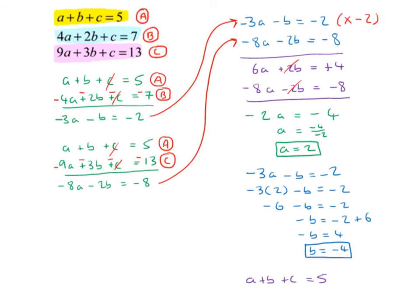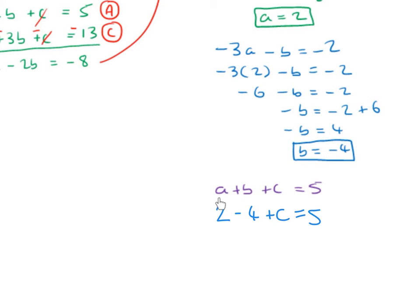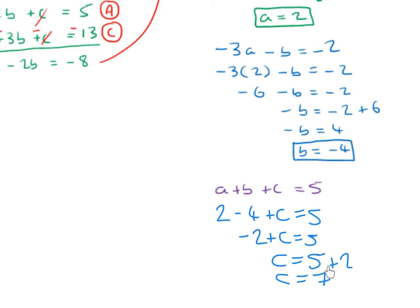Substituting a = 2 and b = −4 back into equation (a): a + b + c = 5 becomes 2 + (−4) + c = 5. So −2 + c = 5, giving c = 7. The final values are: a = 2, b = −4, c = 7, and d = −4.